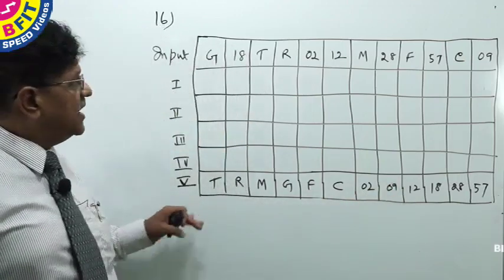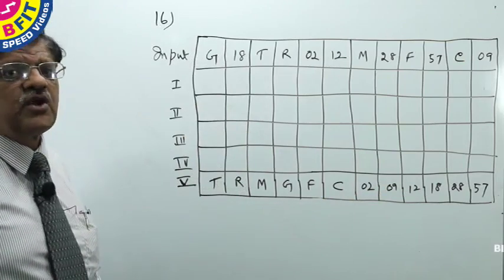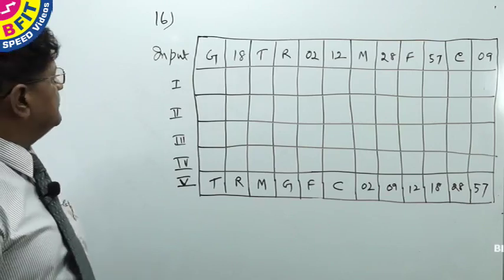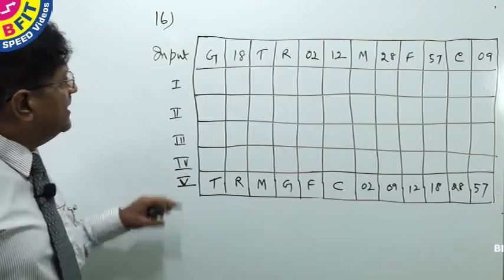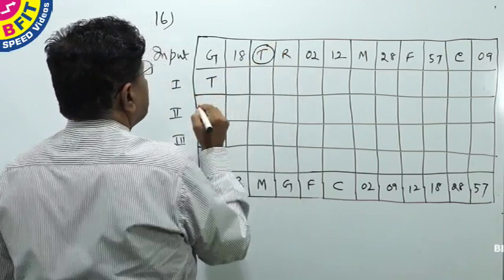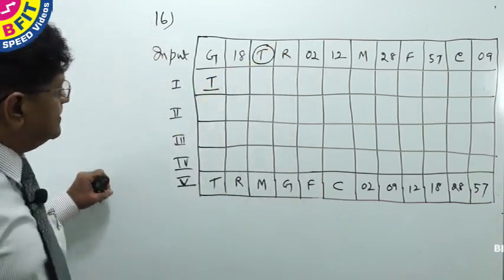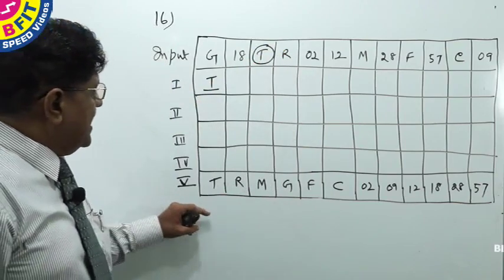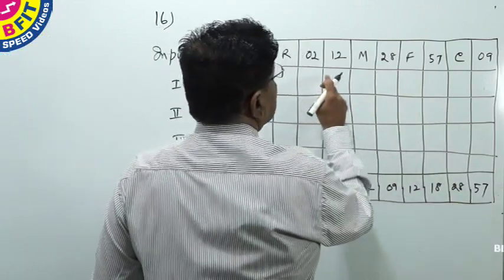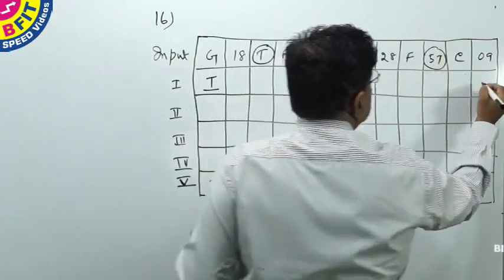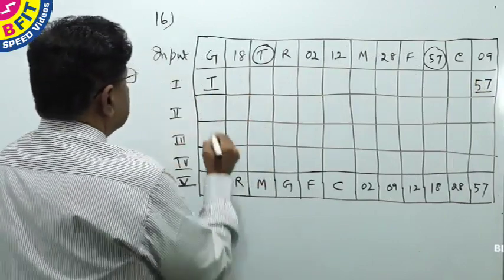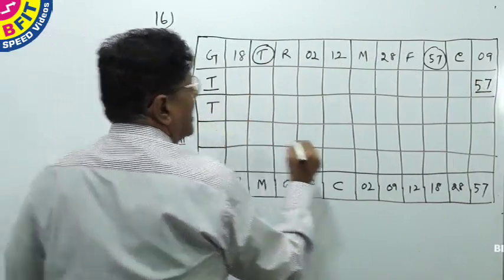But that is not sufficient. We should also understand how the machine works step by step, so we can follow the same steps in the questions asked. First, the highest alphabet should come — which is T. Then the highest number should come at the right extreme, which is 57. So two arrangements are done in Step 1, and we inherit T and 57.